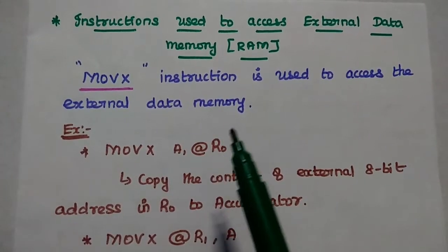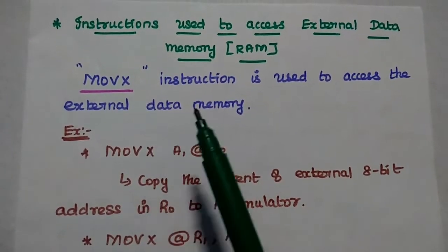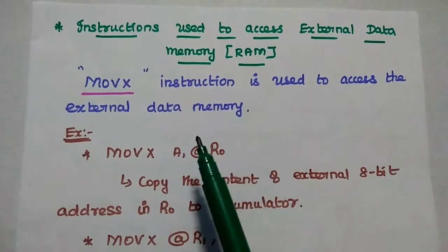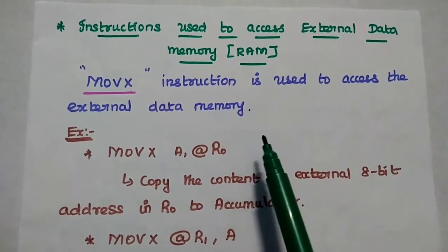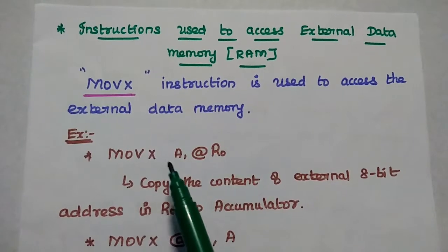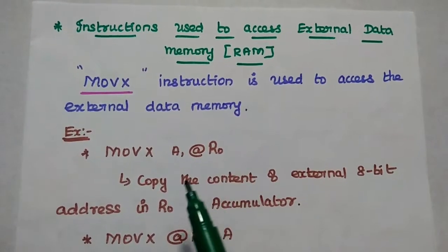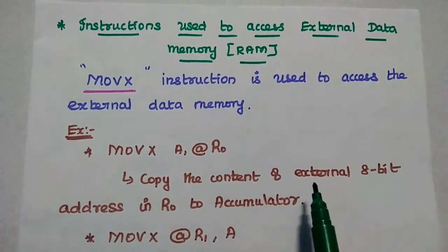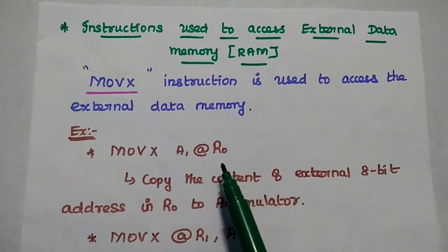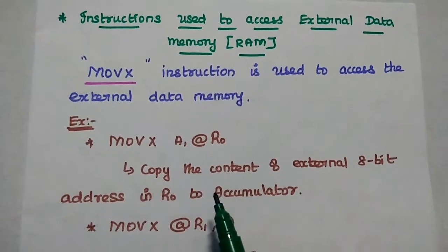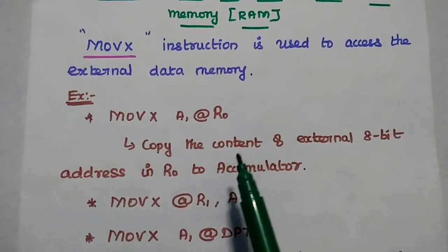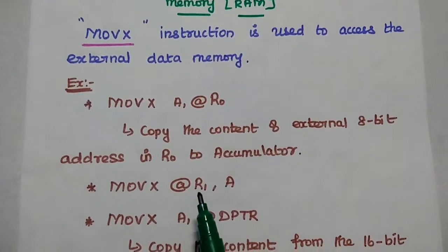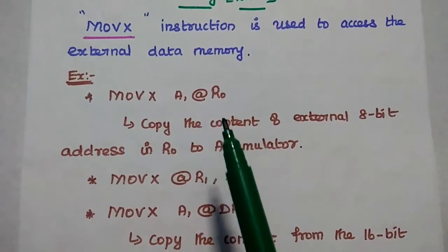The next data transfer instruction is the MOVX instruction. It is used to access the external data memory, which means random access memory. For example, MOVX A, @R0 is going to copy the content of the external 8-bit address stored in R0 register into this accumulator. The memory address is stored in this register.